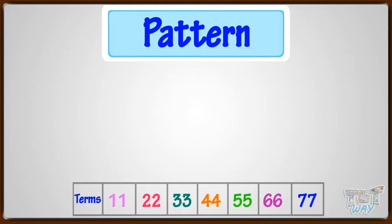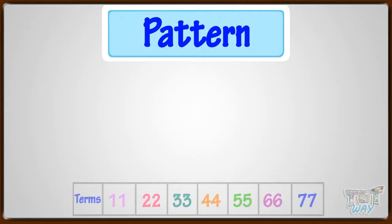Here is a pattern. How many terms are there in this pattern? Each number here is a different term. So here are 1, 2, 3, 4, 5, 6, 7 terms in this pattern.